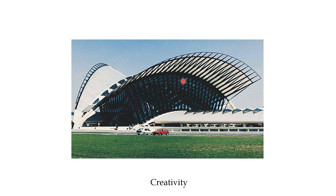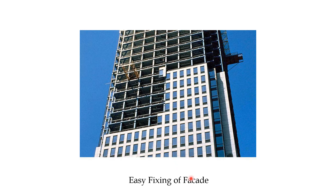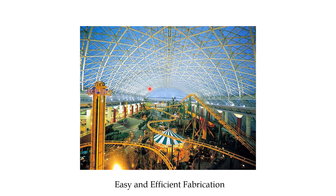You may have also seen on the news or social media the stadiums made of steel structures which look impressive. Steel structures also allow easy extension — if you need an upper story, you can easily weld it to the existing lower story. Easy fixing of facade or cladding, which is the exterior covering material applied over structural members, is another advantage. You can easily connect or weld new cladding to the existing members.